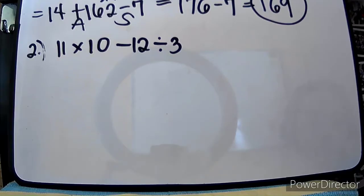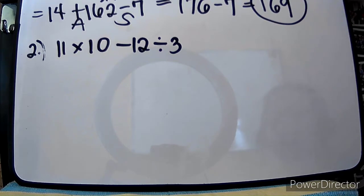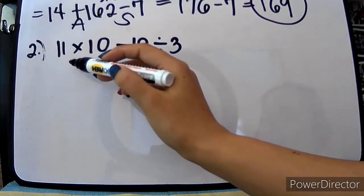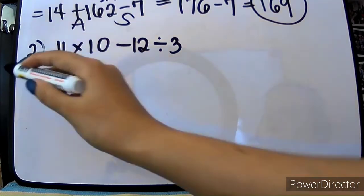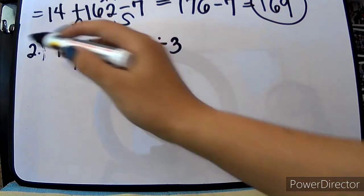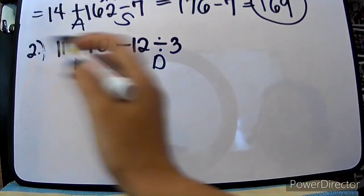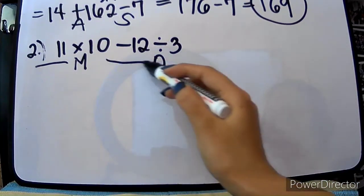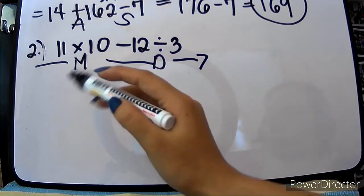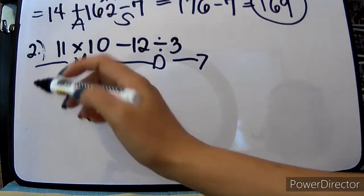Another example is 11 times 10 minus 12 divided by 3. Wala tayo ulit — wala ulit tayong grouping symbol, wala ulit tayong exponent. We will be doing multiplication or division as they appear from left to right. So, from left to right, meron tayong multiplication and division. And again, from left to right, nauna yung multiplication. So, we will be doing first our multiplication.